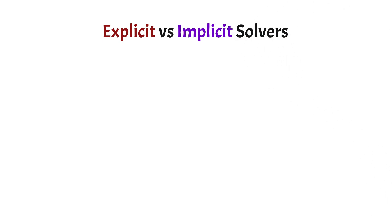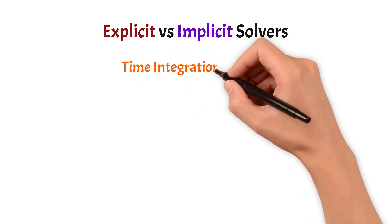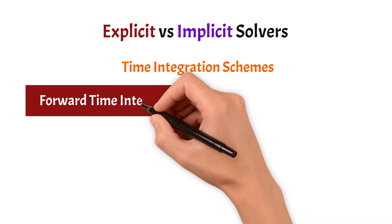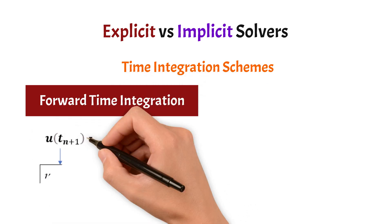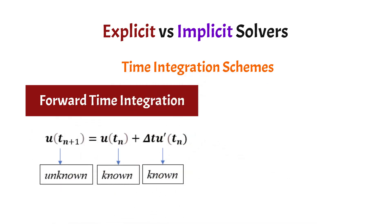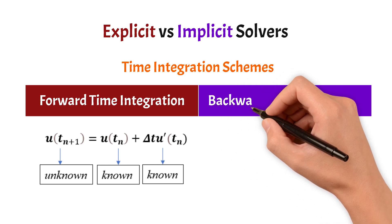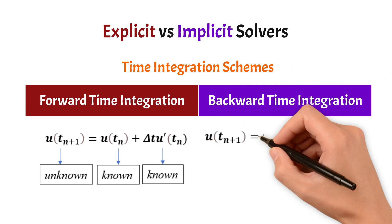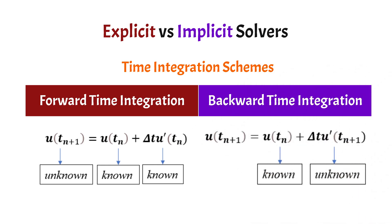We will now look at the differences between explicit and implicit solvers. The first category is the time integration schemes. Explicit uses a forward time integration, where the current state of the system is calculated using the previous state of the system, whereas implicit uses backward time integration, where the current state of the system uses the current and the previous states of the system.